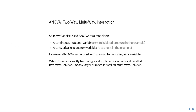So far, we have discussed ANOVA as a model for a continuous outcome variable and a categorical explanatory variable. However, ANOVA can be used with any number of explanatory variables. When there are exactly two explanatory variables, it is sometimes called two-way ANOVA. For any larger number, it is called multi-way ANOVA.